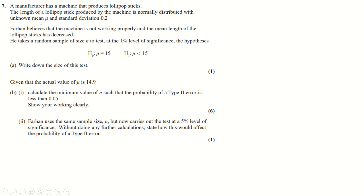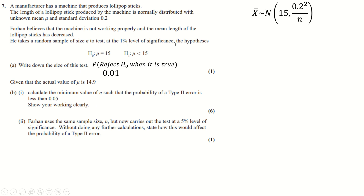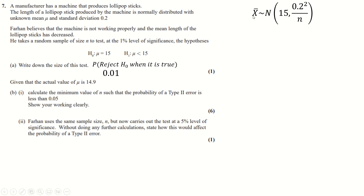Question seven: lollipop sticks have mean mu and standard deviation 0.2. We believe the mean might be less than 15, so we perform a one-tailed hypothesis test at 1% significance with sample size n. The size of the test is simply 0.01 — this is the probability of rejecting H0 when it is true, which equals the significance level.